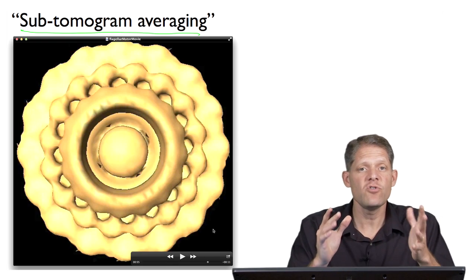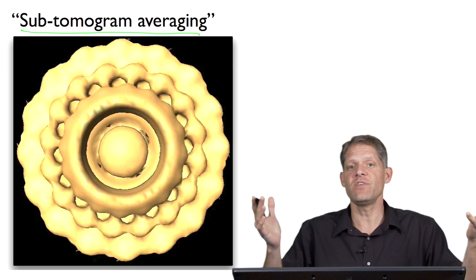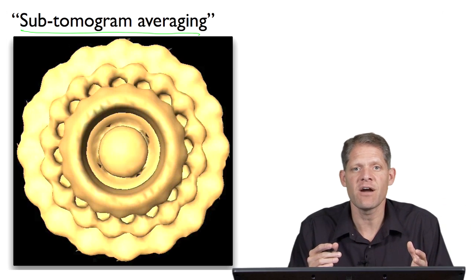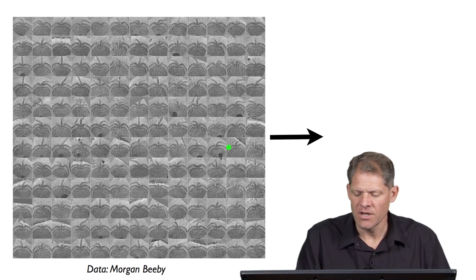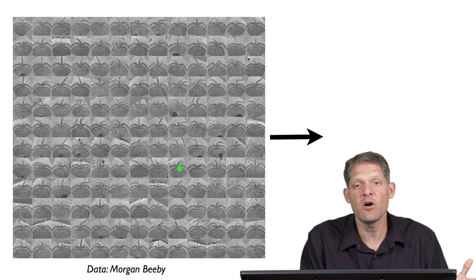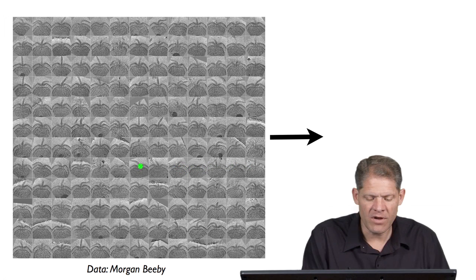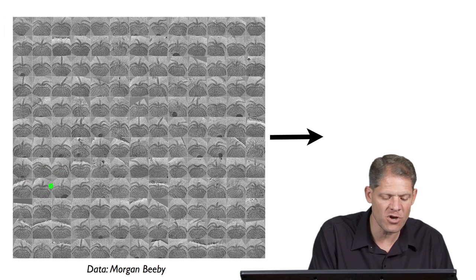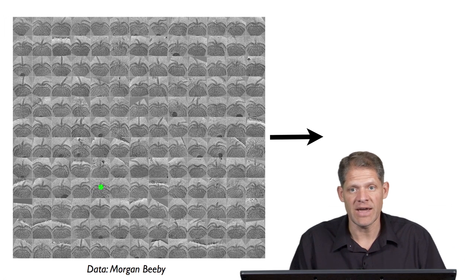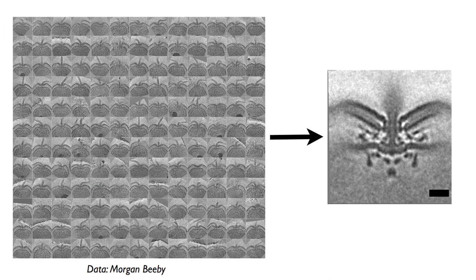This can be done with two objects, five, ten, fifty, or a thousand objects, as long as they are copies of each other that should be averaged. For instance, after recording hundreds of tomograms of a particular species, hundreds of example motors or other objects of interest can be selected and averaged together to produce a much higher signal-to-noise ratio reconstruction. In this case, it's the flagellar motor from Campylobacter jejuni.